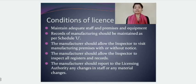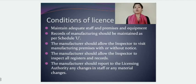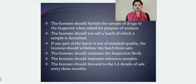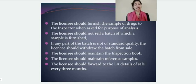The manufacturer should allow the inspector to visit the manufacturing unit at any point of time, with or without notice, and should not object to the inspector examining all registers, records, and the entire premises. The manufacturer should also report to the licensing authority any changes made in staff or in the materials used for manufacturing. If the licensing authority instructs the licensee to furnish a sample of the drug being manufactured for analysis, he must provide it, and should not sell the batch from which a sample has been taken before a result has been furnished.